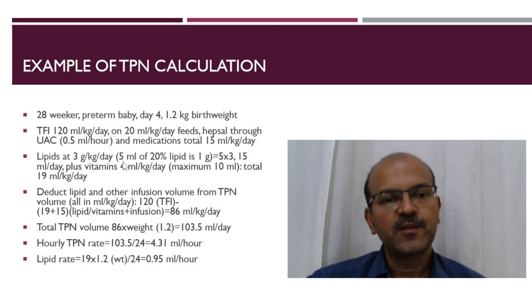The total here of the lipids is 19 ml including the vitamins per kg per day. We deduct the lipid and other infusion volume from the TPN volume, all in ml per kg per day. So 120 minus 19 plus 15 is 86 ml per kg per day. The 15 is the infusion rate, 19 is the lipid rate.